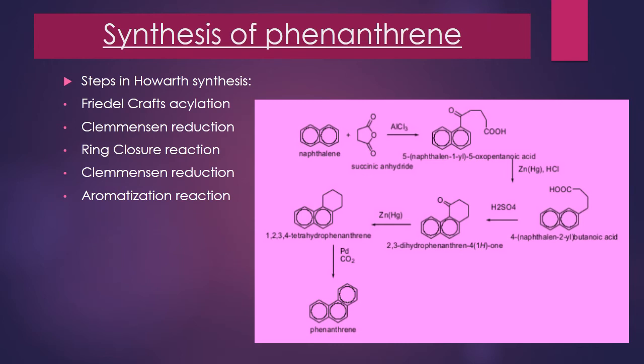In the third step, there is a ring closure reaction in which gamma-naphthyl butyric acid is heated with concentrated H2SO4 or polyphosphoric acid to form 1-keto-1,2,3,4-tetrahydrophenanthrene. In step 4, Clemmensen reduction takes place again, treating this product with amalgamated zinc and HCl.